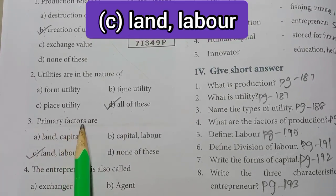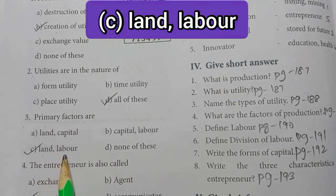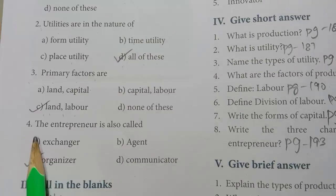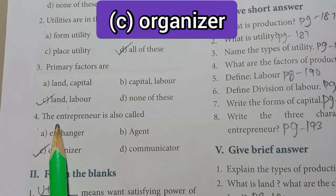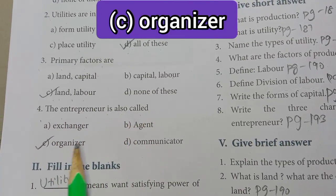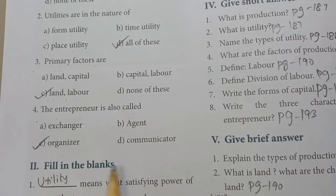Third one: Primary Factors are Land and Labor. C option is the answer. Fourth one: The Entrepreneur is also called — C option — Organizer.